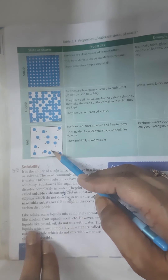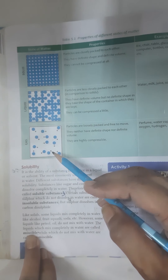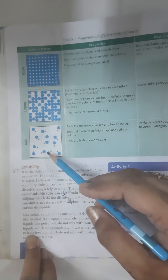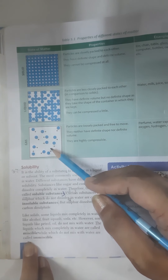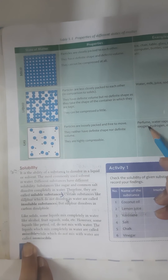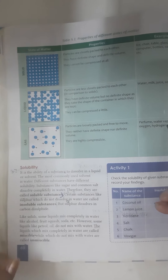In gases, the particles are loosely packed and free to move. They can move in all directions. They neither have definite shape nor definite volume. They are highly compressible. For example: perfume, water vapors, air, oxygen, hydrogen, etc.